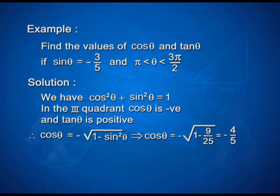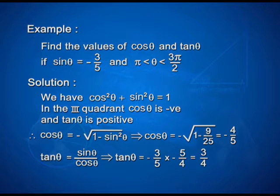Therefore, cos theta is equal to minus root of (1 minus sin square theta), which equals minus root of (1 minus 9 upon 25), giving minus 4 upon 5. Tan theta is equal to sin theta upon cos theta, simplified as (minus 3 upon 5) into (minus 5 upon 4), that is 3 upon 4.